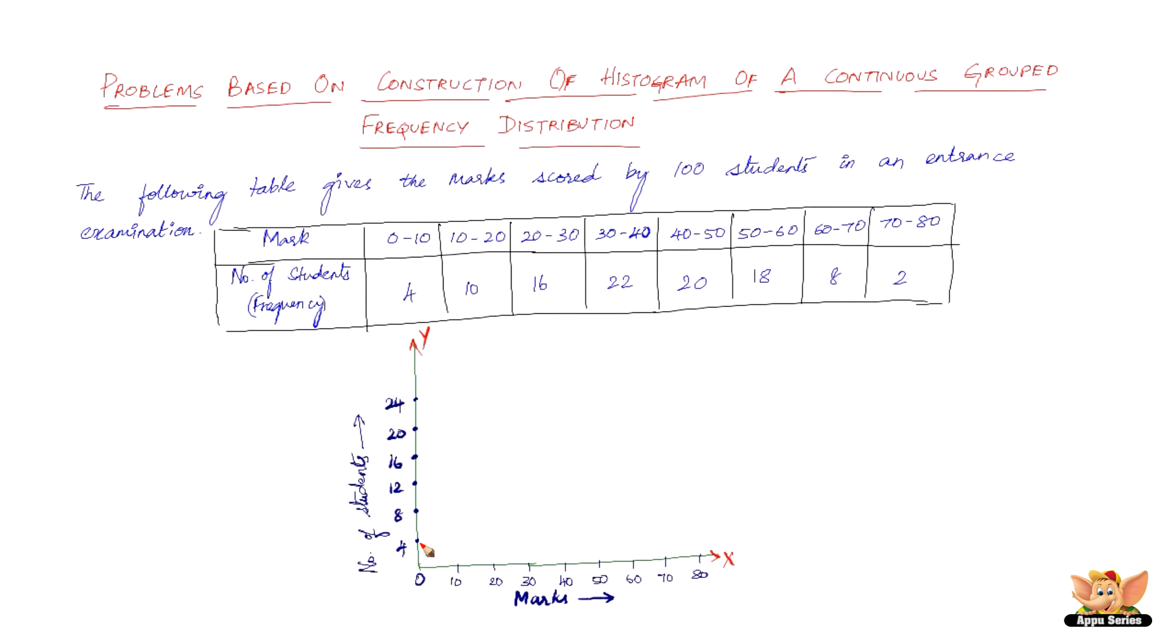Got the first bar. And then 10 to 20 is about 10 students. That is in between 8 and 12. So here it is. I've got the second one. The third one says 20 to 30 and 16. So here it is.